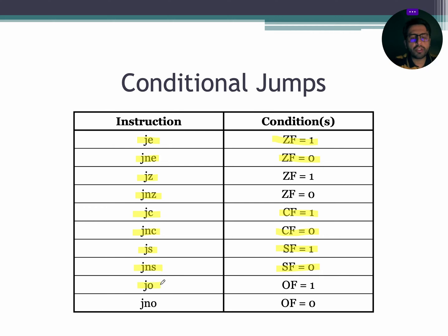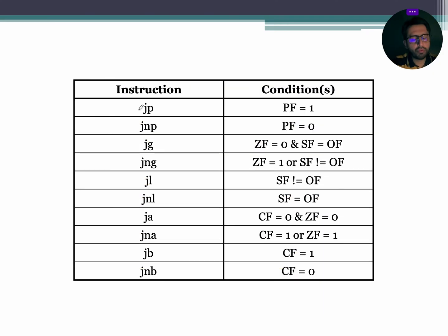Next is JO, which stands for jump if overflow; the condition is overflow flag equals 1. Similarly, JNO stands for jump if not overflow; the condition for JNO is overflow flag equals 0. Next is JP, which stands for jump if parity; the condition is parity flag must be equal to 1. Next is JNP, which stands for jump if not parity; the condition is parity flag must be equal to 0.